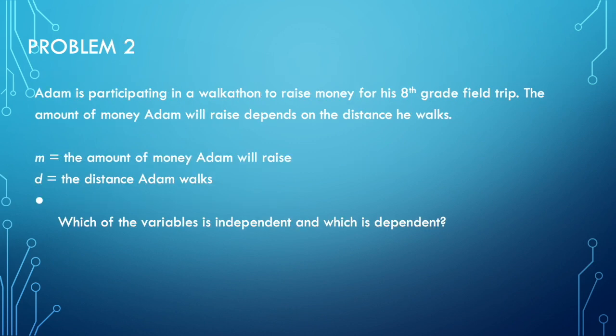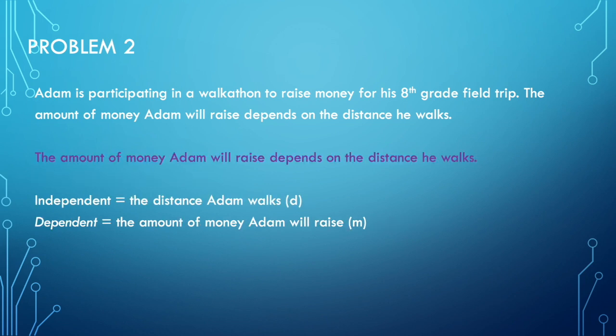Next one: Adam is participating in a walk-a-thon to raise money for his eighth grade field trip. The amount of money Adam will raise depends on the distance he walks. So the amount of money is your dependent variable and the distance he walks is your independent variable.